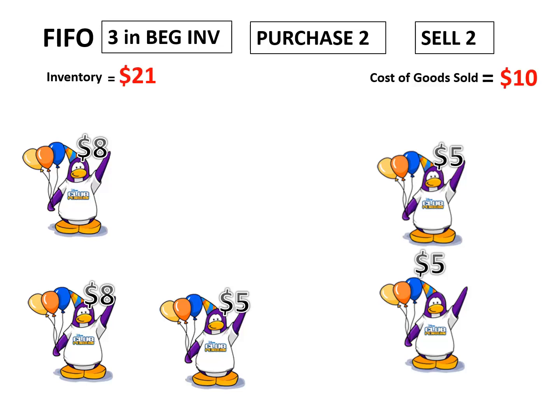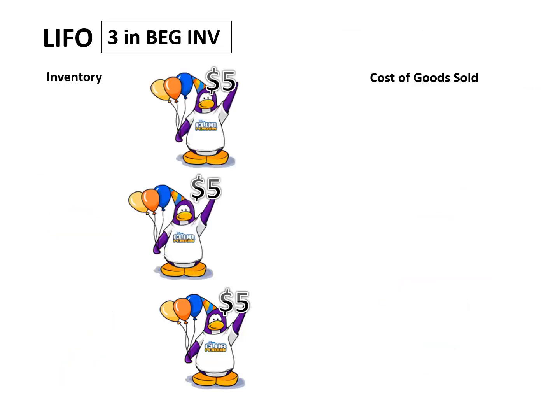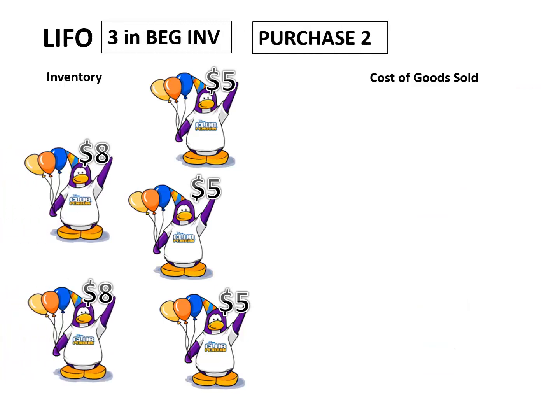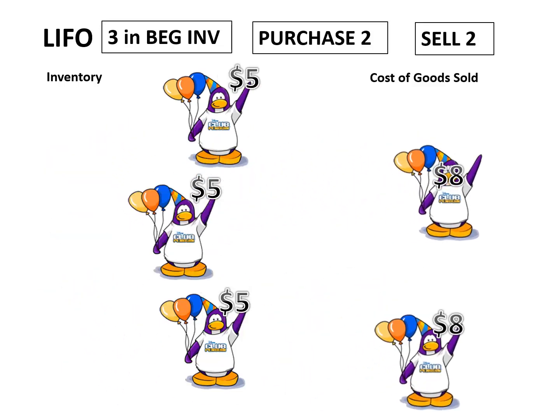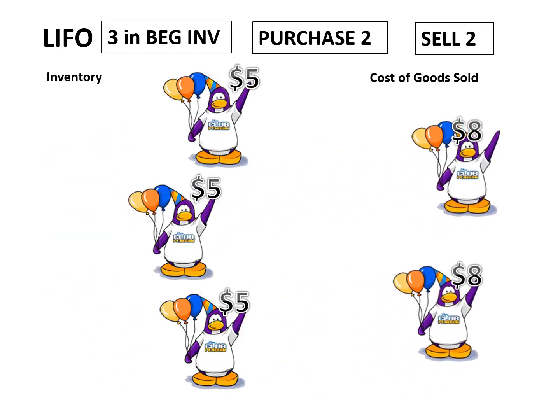End result. Easy enough. Let's try LIFO. Begin with three at five. Purchase two at eight. Now the two that we sell are last in, first out. End result.